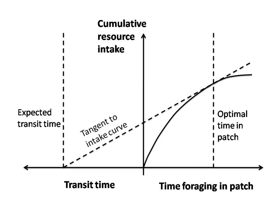The marginal value theorem (MVT) is an optimality model that usually describes the behavior of an optimally foraging individual in a system where resources, often food, are located in discrete patches separated by areas with no resources. Due to the resource-free space, animals must spend time traveling between patches. The MVT can also be applied to other situations in which organisms face diminishing returns.